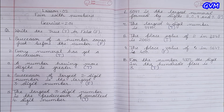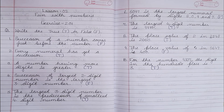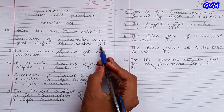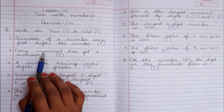For true, write T; for false, write F. Number one: 'Successor of a number comes just before the number.' Kisi bhi number ka successor jo hota hai, woh us number ka just pahle wala number hota hai — that is false. Because successor is the number which comes just after that number. Suppose you have digit one, then one ka successor kya hoga? Two. Hundred ka successor hoga 101.